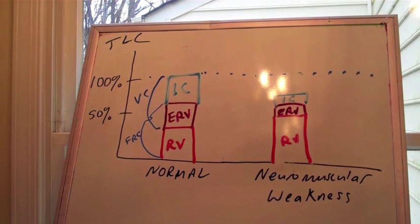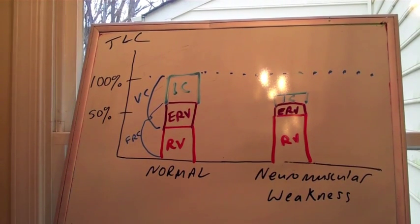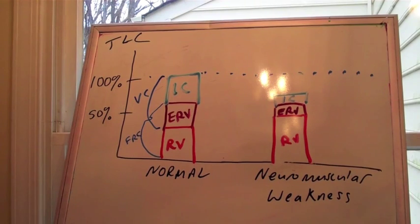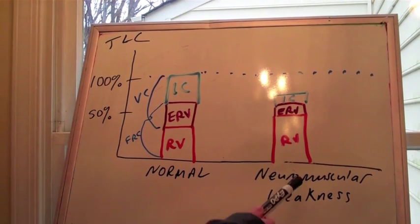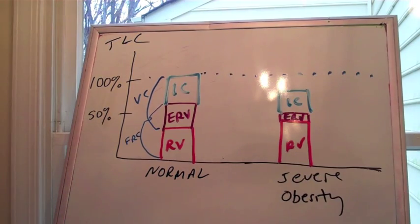How about neuromuscular weakness? You just can't breathe that air out. So your residual volume is pretty high. You have a large residual volume left over because you can't breathe the air out. Obesity. Your lung compartments are reduced. All these volumes that you can measure. Especially your expiratory reserve volume.